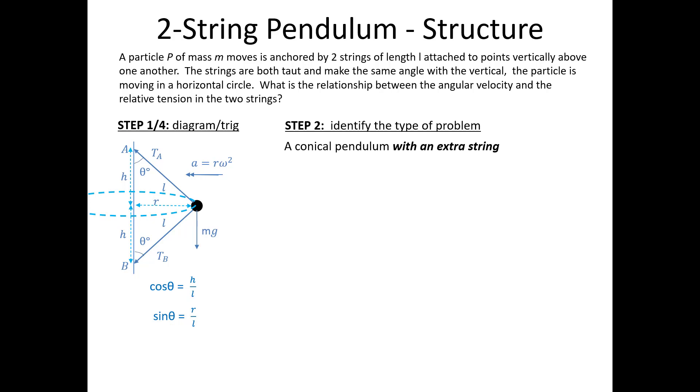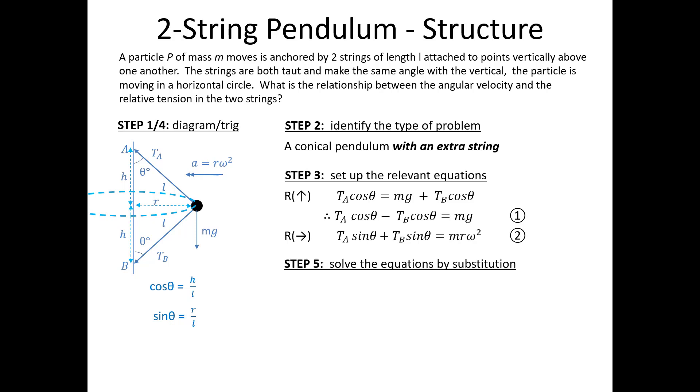Then what we have to do is set up a bunch of equations. First of all, resolving vertically, tension of A times cos θ, that's the vertical upwards force, has to be balanced by a combination of mg, the force acting downwards, and the vertical component of this other tension. Just like with the banked track with friction, I get an extra term in this equation. I'm going to rearrange that equation so that I get all my trig functions on one side and just mg on the other. Similarly, when I resolve horizontally, I get an extra term because I have two separate radial forces, one being delivered by each bit of string. They're simultaneous equations. There are two things I need to work out here, TA and TB.